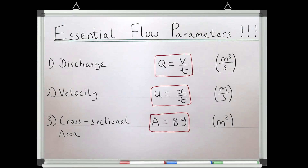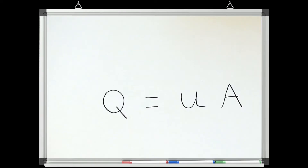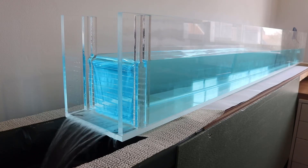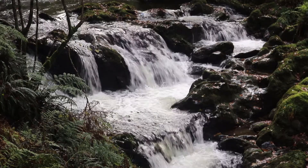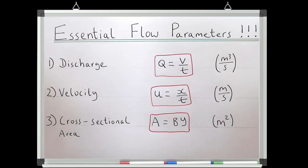In the previous video we looked at the three essential flow parameters needed to describe a flow at a basic level. We also looked at a really important equation to link these parameters together, and finally how that equation could be used to explain what was going on in a few different flows — first some examples in the flume, and then some examples in a real stream. As we move through these lessons we're going to build on equations like this and look at many more mathematical frameworks needed to fully describe moving water.